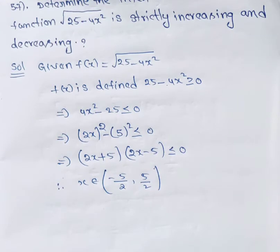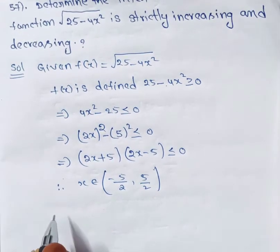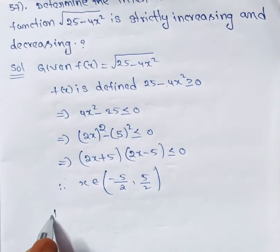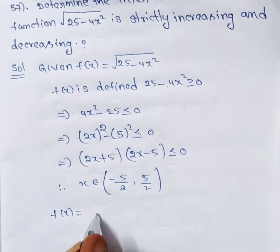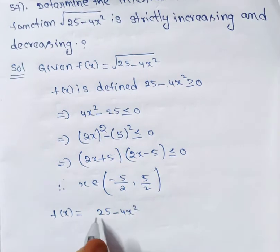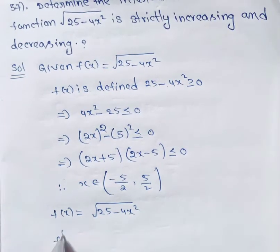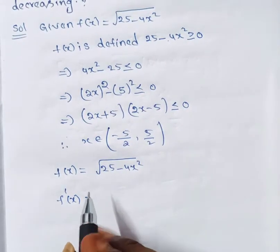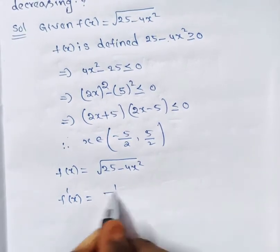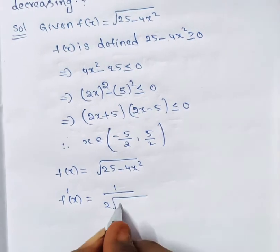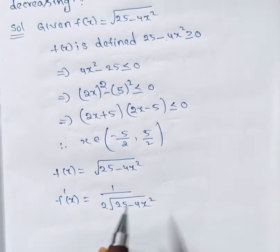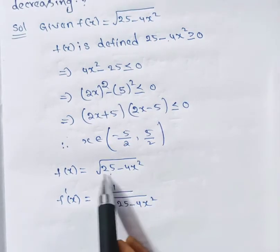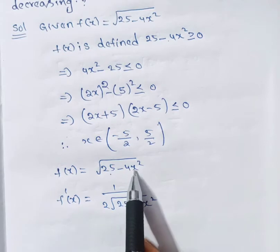Now we find the strictly increasing and decreasing intervals. We take the derivative of f(x) = √(25 − 4x²). Using the rule d/dx of √x = 1/(2√x), we get f'(x) = 1/(2√(25 − 4x²)) multiplied by the inner derivative of (25 − 4x²). The constant 25 gives 0, and the derivative of −4x² gives −8x.